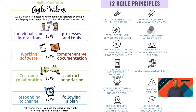The fourth value is responding to change versus following a plan. It's not like the waterfall model where you have a requirement phase for three months and then development for the next three months, and any change has to come as a change request. In Agile, our iterative methodology should be able to incorporate those changes, because changes are inevitable.